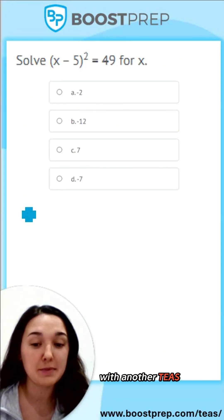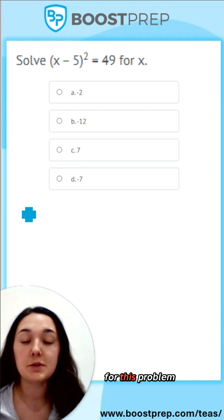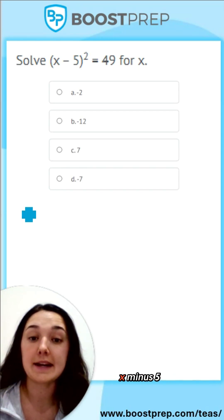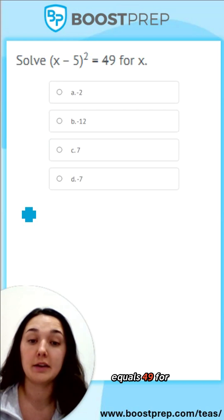Hi, this is Nurse Claire from Boost Prep with another Tease Math problem. For this problem, you solve for (x - 5)² = 49 for x.